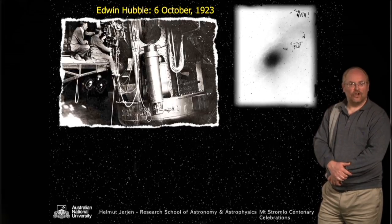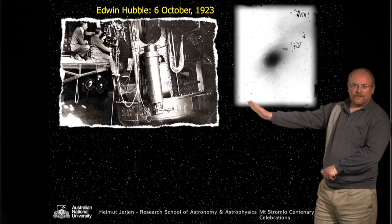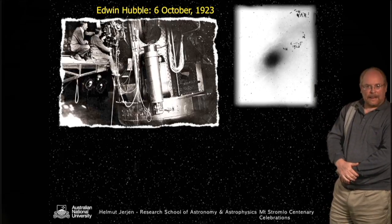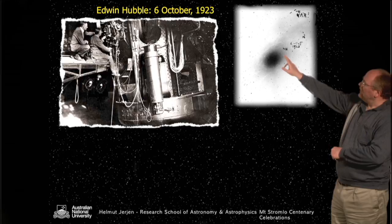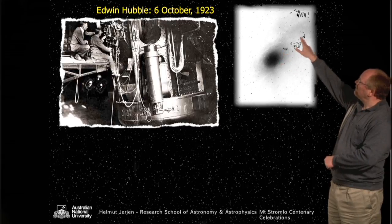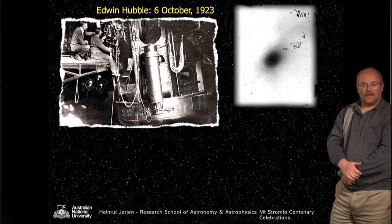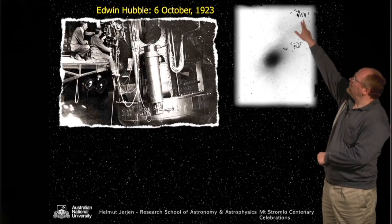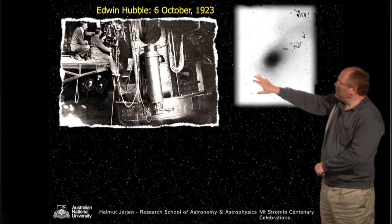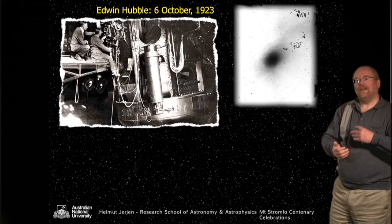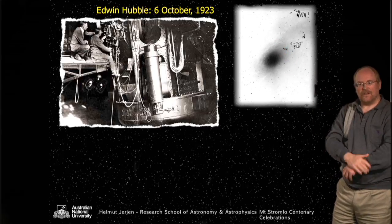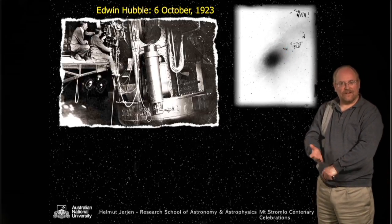It was the famous Edwin Hubble on the 6th of October 1923 who observed with the telescope a very special type of spiral nebulae, shown here on the photographic plate. On that night, he took this photo and identified novae — putting N letters and ticking the positions. But then he also realized that one of the novae was in fact a variable star, a Cepheid star, and that star belonged to this Andromeda nebula. So if he could measure the distance to this single star, which is part of this nebula, he could also measure indirectly the distance to the Andromeda galaxy.